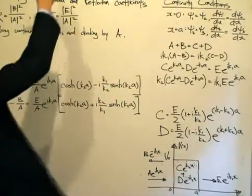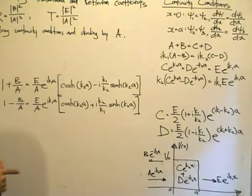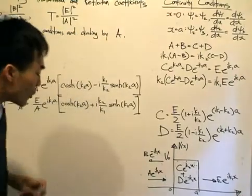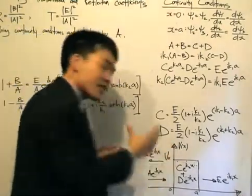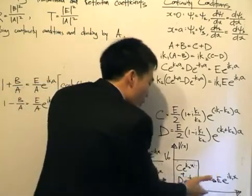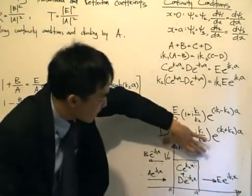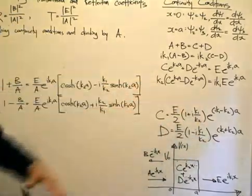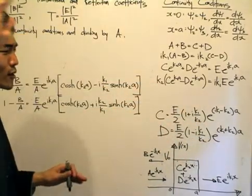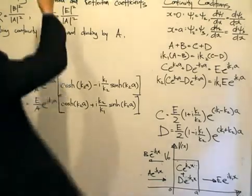Notice we don't have the ratios of k1 and k2. Why? It's because these waves that we are using are in the region where the potential is the same — the potential equals zero. Since the potential in the regions is the same, the wave number k1, which is the square root of 2mE divided by h-bar, is the same. So that's why they cancel out.